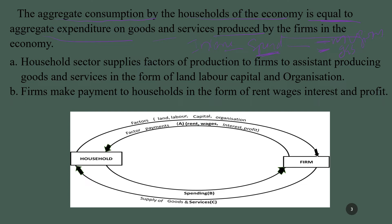This is the circular flow of income flow chart. First, the household sector will supply factors of production — land, labor, capital, organization — to assist firms in producing goods and services. Goods and services are produced using the factors of production supplied by the household sector.